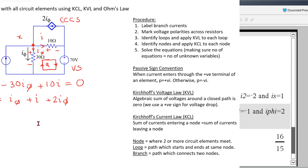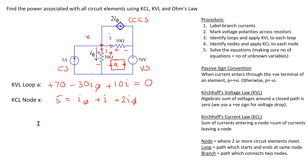Hence we obtain the solution: I = -1 amp and I_phi = 2 amps. Now we can find the power associated with all the circuit elements.